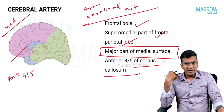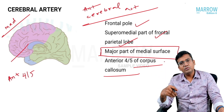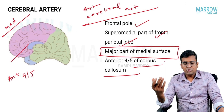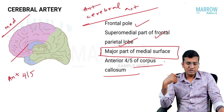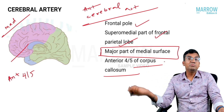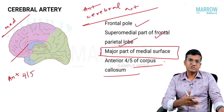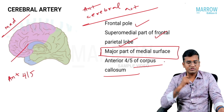The anterior cerebral artery also supplies the frontal pole, the supramedial margin of the frontal lobe, the parietal lobe, and the major part of the corpus callosum — specifically the anterior four-fifths of the corpus callosum.